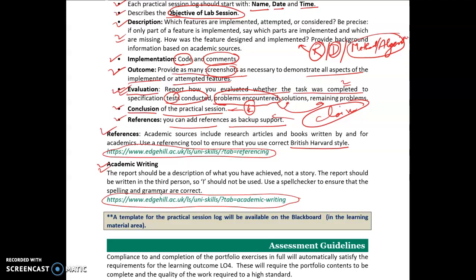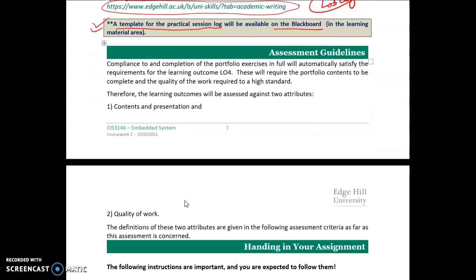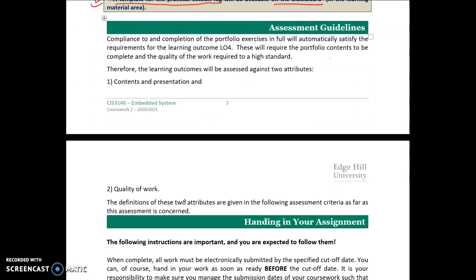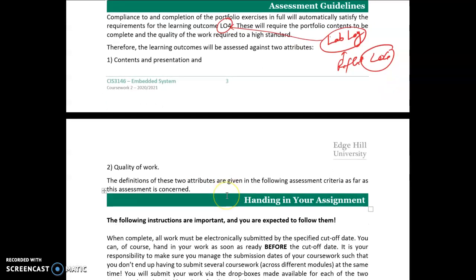You will prepare a lab log, and you can get the template for the practical session log from Blackboard. For the assessment of your lab log, Learning Outcome 4 will be assessed, so your lab log must reflect how you have achieved learning outcome 4. In order to achieve learning outcome 4, you need to cover two attributes: the first is contents and presentation, and the second is quality of your work. Both attributes must be present in your lab log for each task.